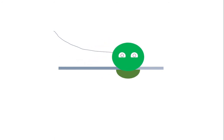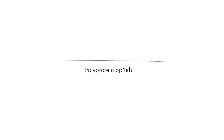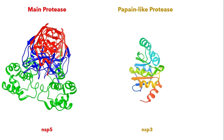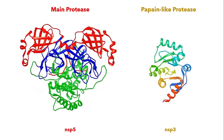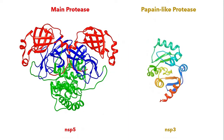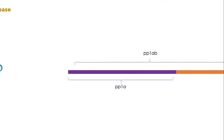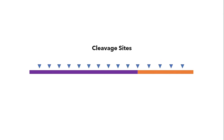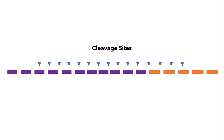When both ORF1A and B are translated, the product is polyprotein PP1AB, which contains non-structural proteins NSP1 through NSP16. Importantly, these NSPs cannot fulfill their function until separated. This is why two special proteins within that chain, NSP3 and NSP5, are capable of cleaving polyprotein links, acting on these polypeptide chains to form 16 smaller NSPs, 1 through 16.